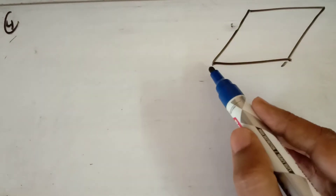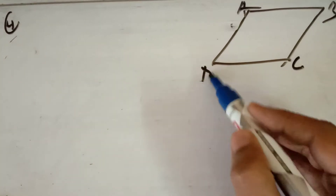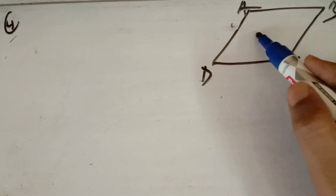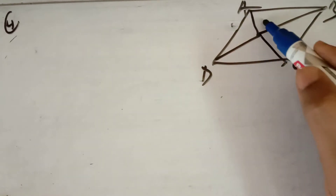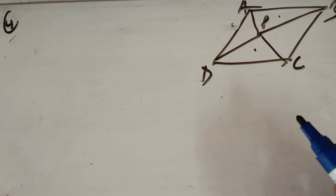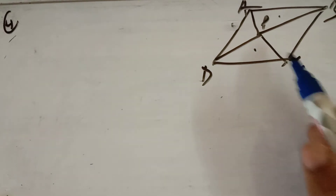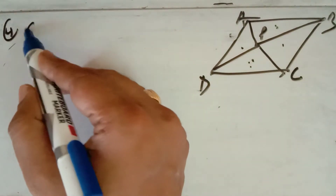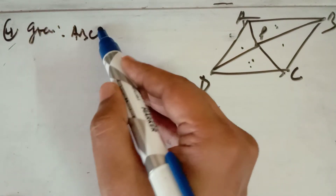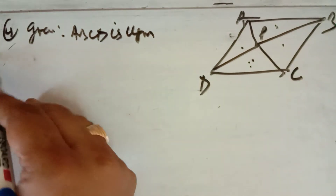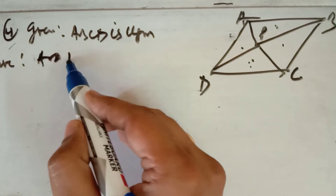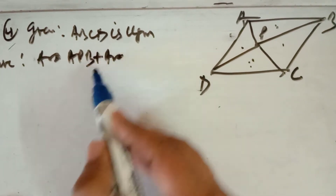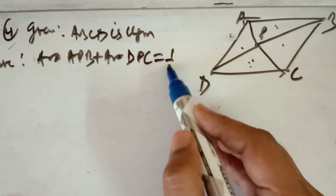Now in question number 4, there is a parallelogram ABCD with a point P in the interior joined to all vertices. You have to prove that the area of triangle APB plus area of triangle DPC is equal to half the area of parallelogram ABCD.